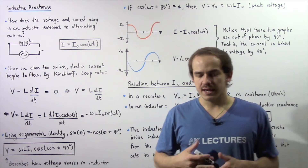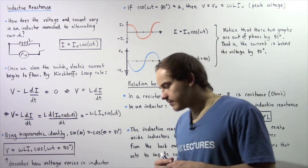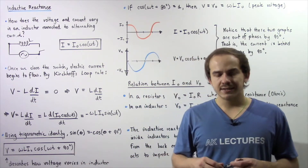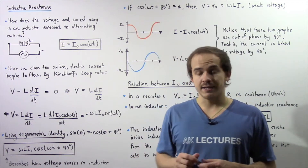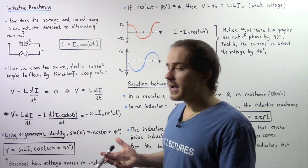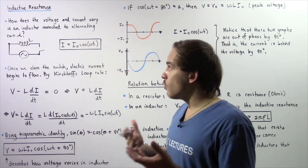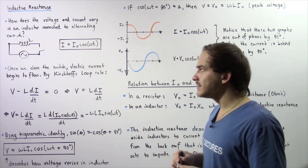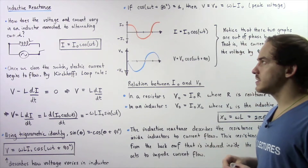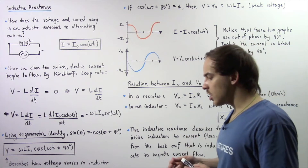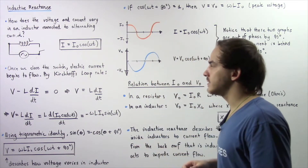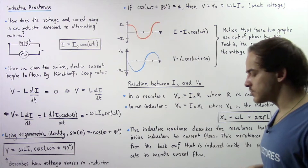In this lecture, we're going to discuss a concept known as inductive reactance. So what exactly is inductive reactance? Well, inductive reactance is the resistance that exists inside an inductor as a result of the induced EMF. Before we state the equation for inductive reactance, let's answer the following question: how exactly does the voltage and the electric current vary with respect to time inside an inductor that is connected to an alternating electric current?